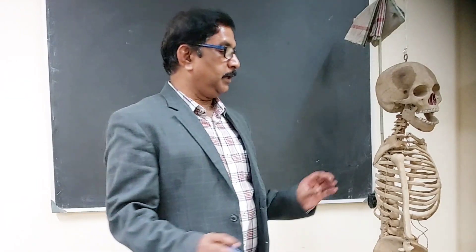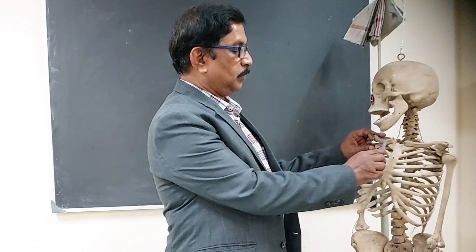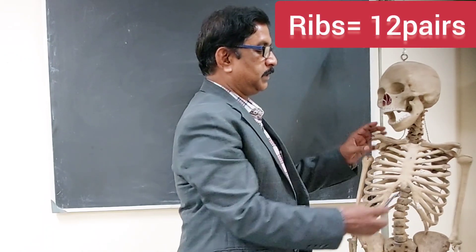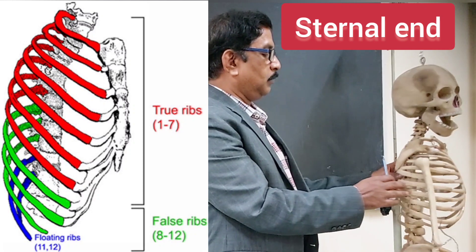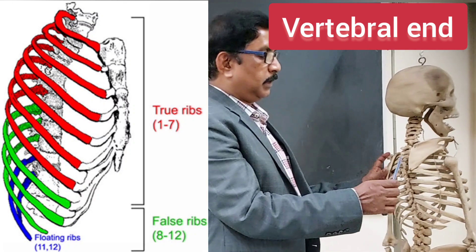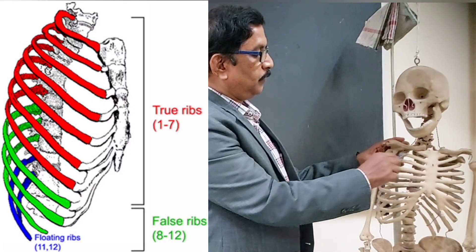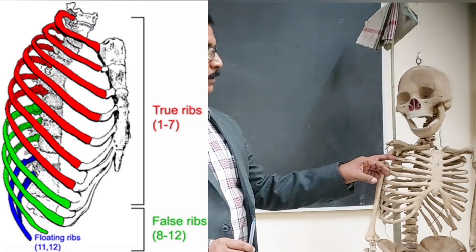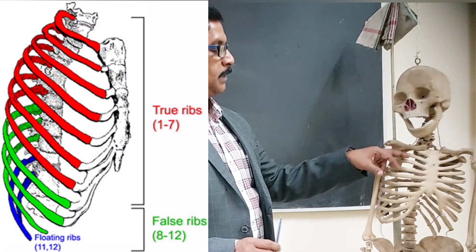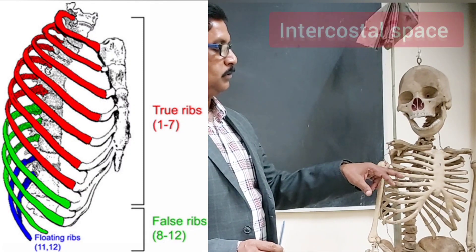And you all know ribs are 12 pairs, 12 on this side and 12 on this side, having two ends - one sternal end and another one vertebral end. And from the first to 12 ribs, all the ribs are obliquely aligned in adults, and the intervening space between the adjacent ribs are called intercostal spaces.